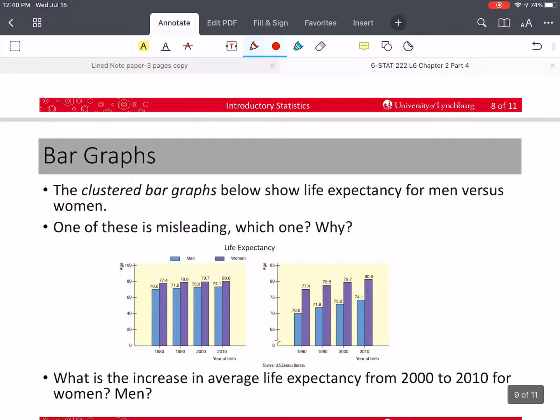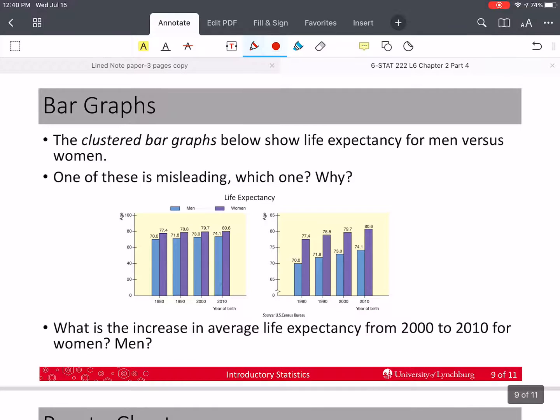So let's take a look at a bar graph. Here, this is more complicated. This is called a clustered bar graph because we have two bars for each value or each category. So this category is 1980. Here's 1990, 2000, 2010. And we've got a different color for men than for women. And this is life expectancy. So we have age over here. And so we have these different average life expectancies based on when somebody was born. Okay?